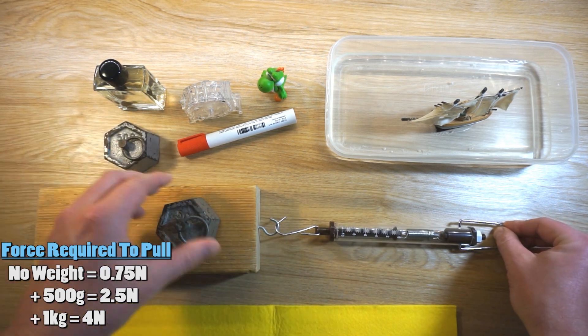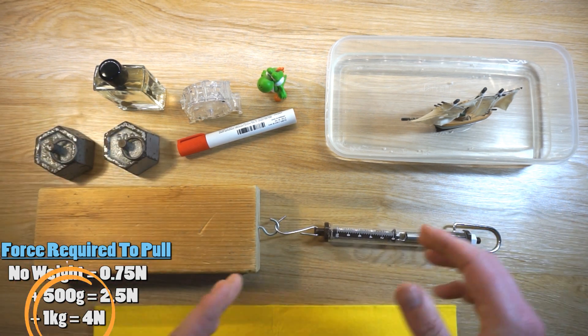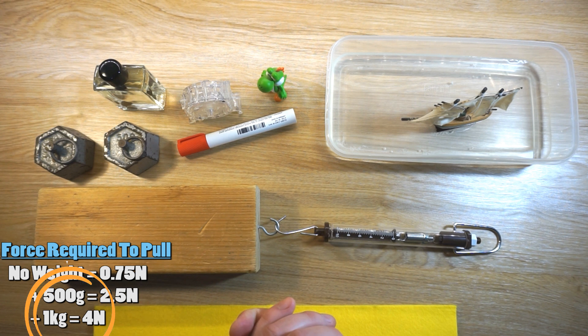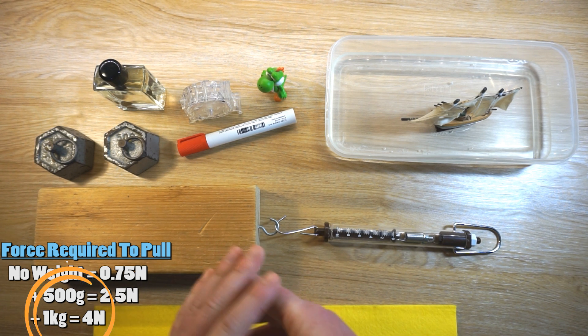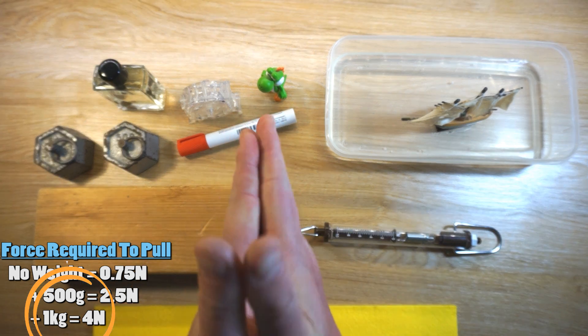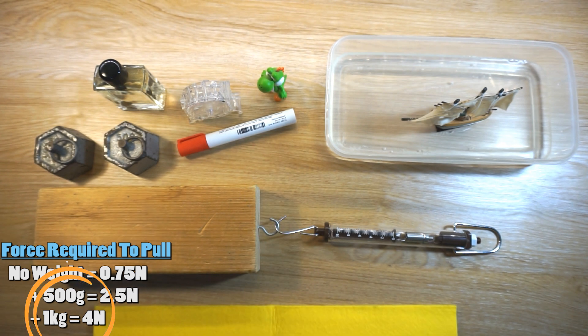As we've demonstrated, it takes more effort to pull the block of wood when it has more weight added to it, and that's because that weight is adding more force between the two surfaces and increasing that amount of friction, making it harder to pull.